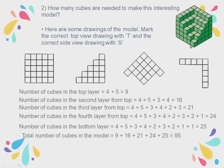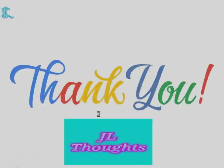Alternatively, you can count from the bottom layer upward. The bottom layer has 25 cubes, each layer going up removes some cubes giving 24, 21, 16, 9. For the top view you see an L-shape, so that is marked T. For the side view you see a step pattern, so that is marked S. With this we have completed the chapter Boxes and Sketches. We'll meet in the next video with a new chapter — thank you and have a nice day.